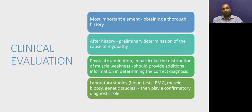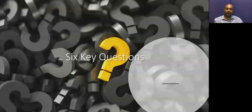Coming to clinical evaluation, the most important element is to obtain a thorough history. After history, we should have a preliminary determination of the cause of myopathy, then move to physical examination — in particular the distribution of weakness — which provides additional information for the correct diagnosis. Finally, laboratory studies including blood tests, EMG, muscle MRI, neuromuscular ultrasound, and genetic studies play a confirmatory diagnostic role.